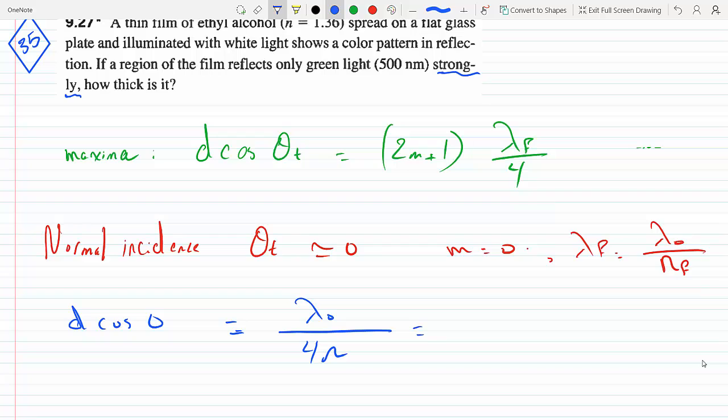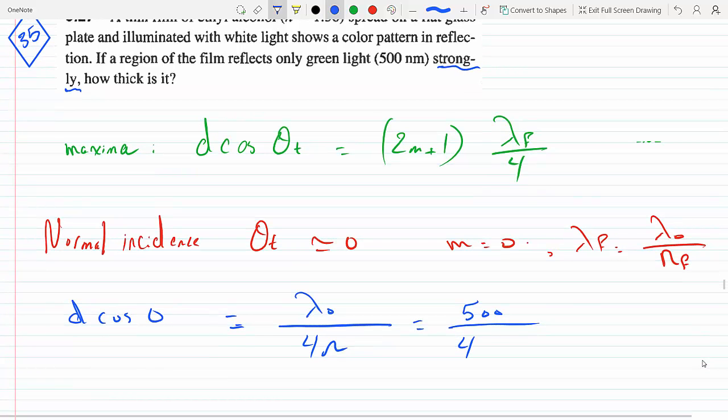Lambda 0 is 500 nanometers. Let's leave it in nanometers so we get the answer in nanometers: 500 divided by four times 1.36.